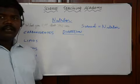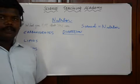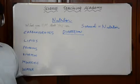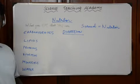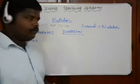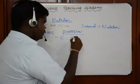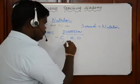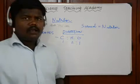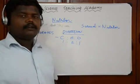Now let's look at carbohydrates. Carbohydrates are a composition of carbon, hydrogen, and oxygen in the ratio of 1:2:1. Carbohydrates are of many types, starting from monosaccharides to polysaccharides.